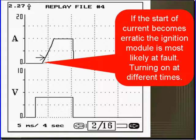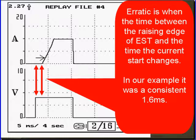If the start of the current becomes erratic, the ignition module is most likely at fault, turning on the coil at different times. The two arrows show that the turn on signal could be oscillating back and forth there. Erratic is when the time between the rising edge of the EST and the time the current starts continuously changes. In our example, it was consistently 1.6 milliseconds.